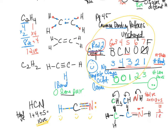Let's verify we have 18 valence electrons used in the structure. Counting all electrons: we get exactly 18. Each element has a complete octet. That's how you draw the Lewis structures of organic chemistry.